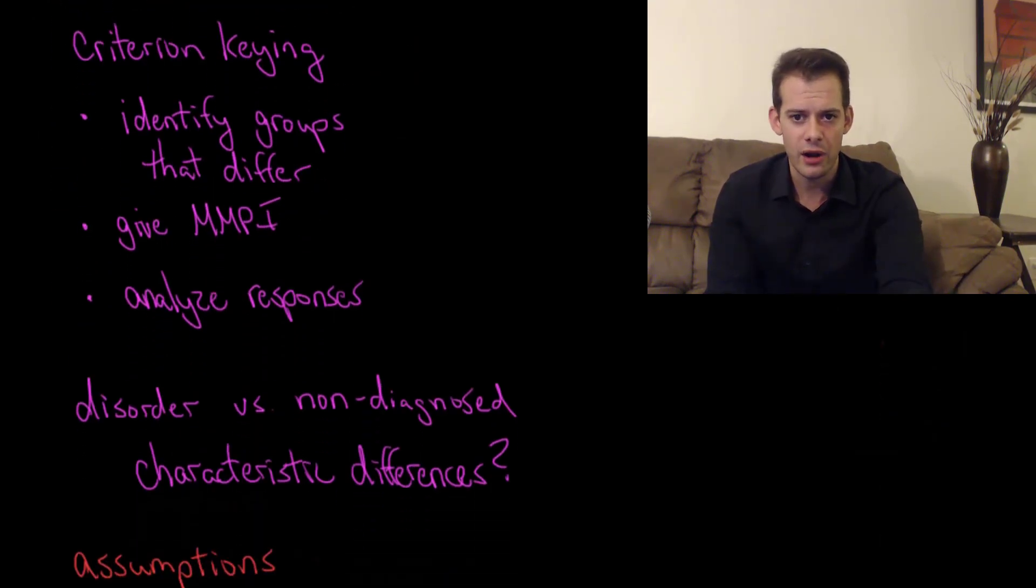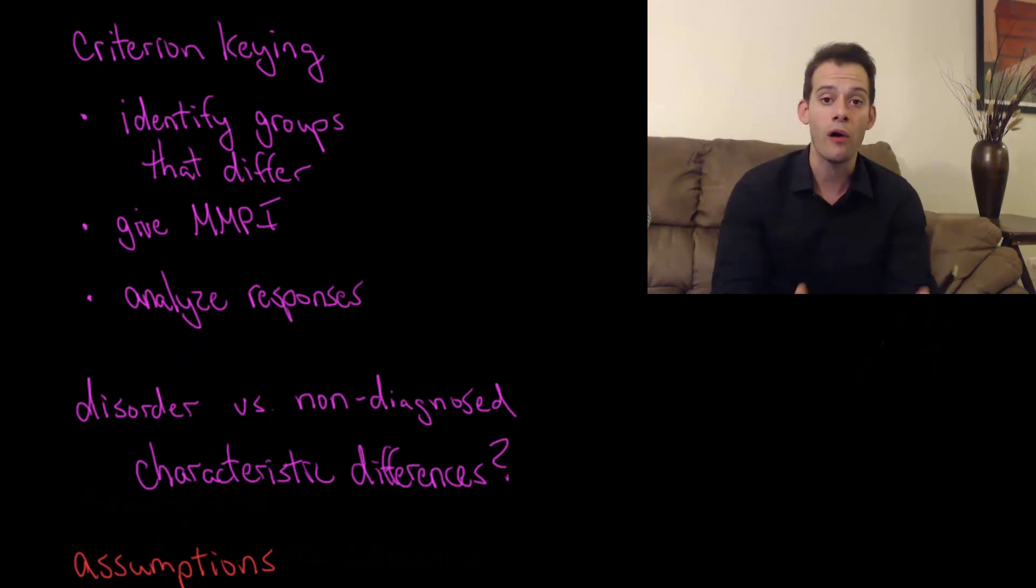What Criterion Keying does is you take people that you already know differ in some way. You take two groups of people and you know that they're different in some way, and then you give both groups the MMPI. Then you analyze the responses and you look for patterns that occur between those two groups.